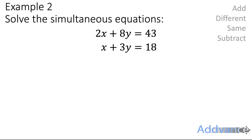Okay, let's move on to example 2. Solve these simultaneous equations. 2x plus 8y equals 43, and x plus 3y equals 18. Okay, but here, none of the terms are similar. So you should see that the y's are different numbers, and the x's, this is 2x, this is 1x. So we can't immediately cancel them out.